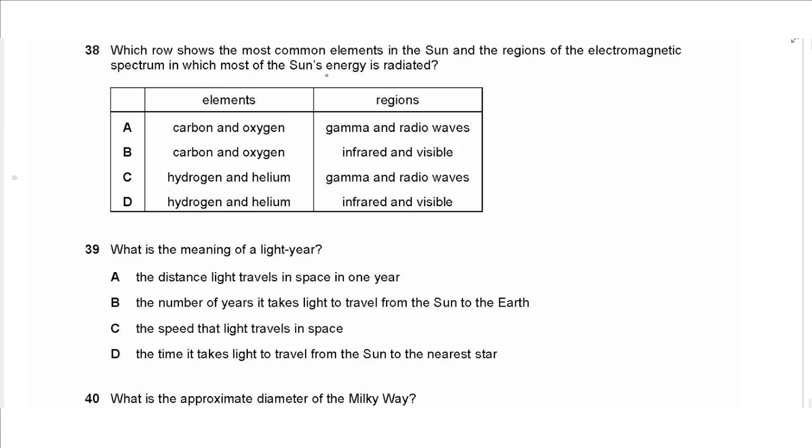Question 38 says which row shows the most common elements in the sun and the regions of electromagnetic spectrum in which most of the sun's energy is radiated. So elements in the sun are hydrogen and helium, and the regions of emissions with maximum intensity from the sun is infrared and visible light and ultraviolet, not gamma and radio waves. They are emitted but not with large quantities. So here the answer is D.